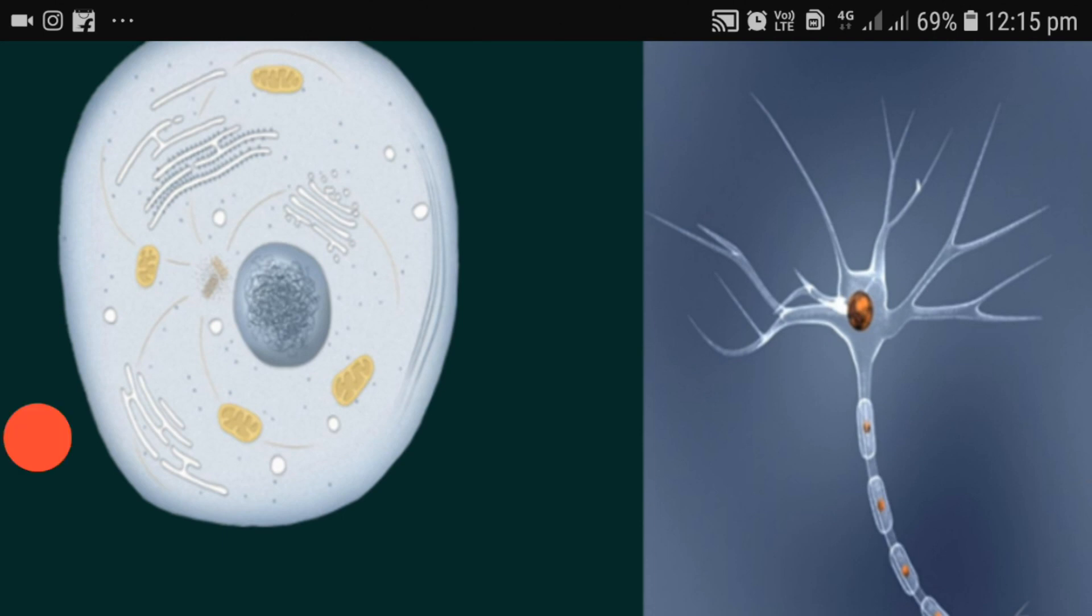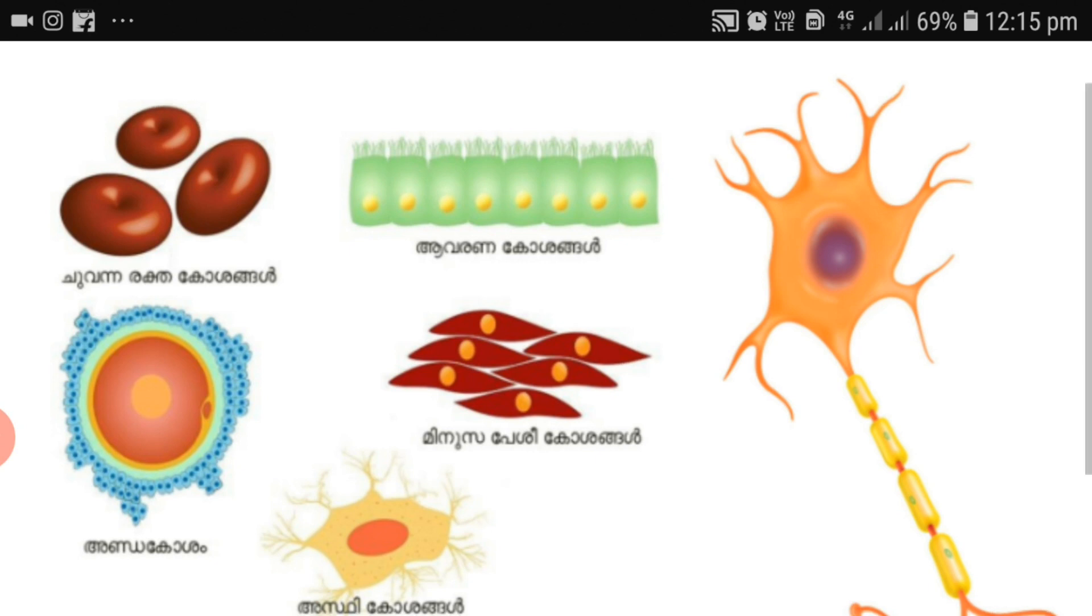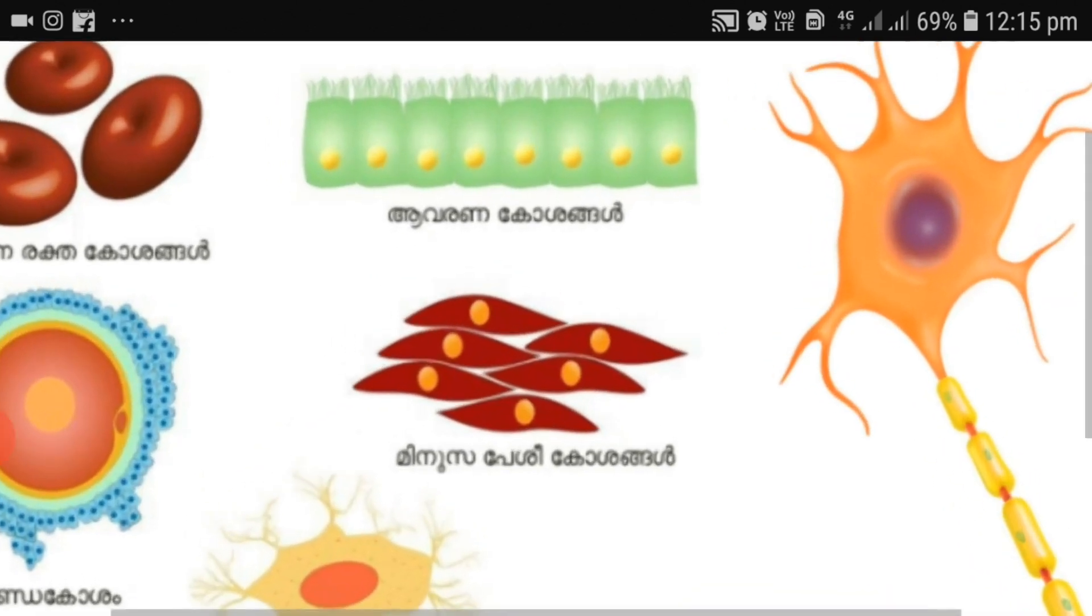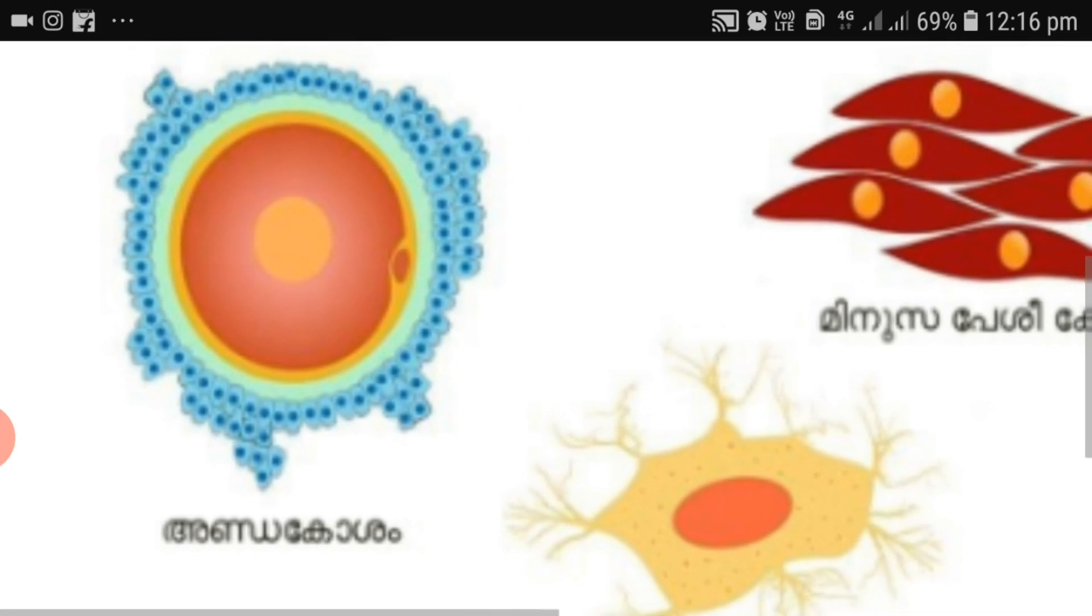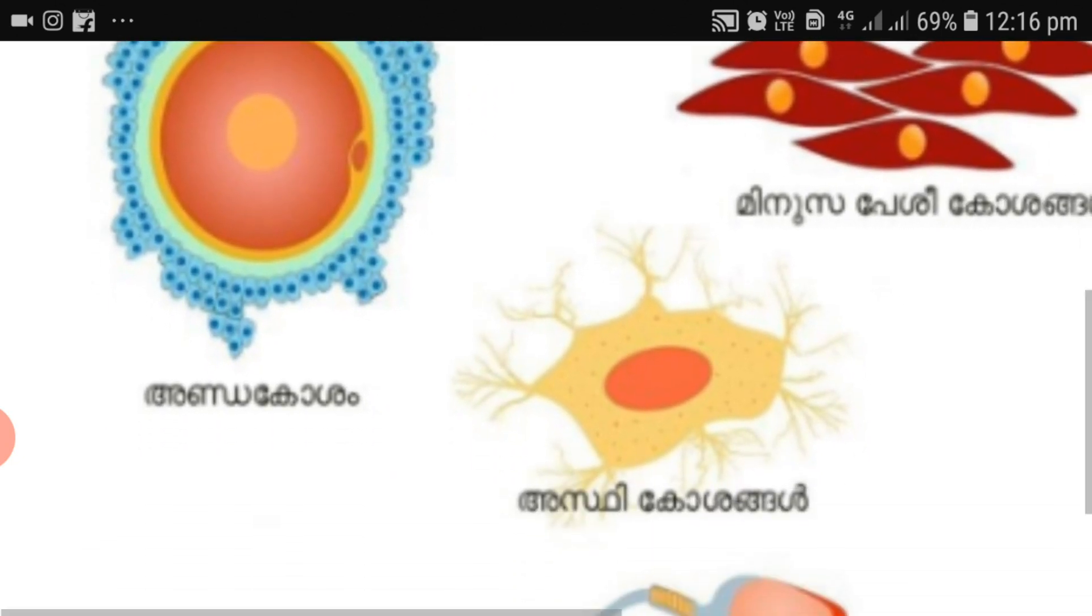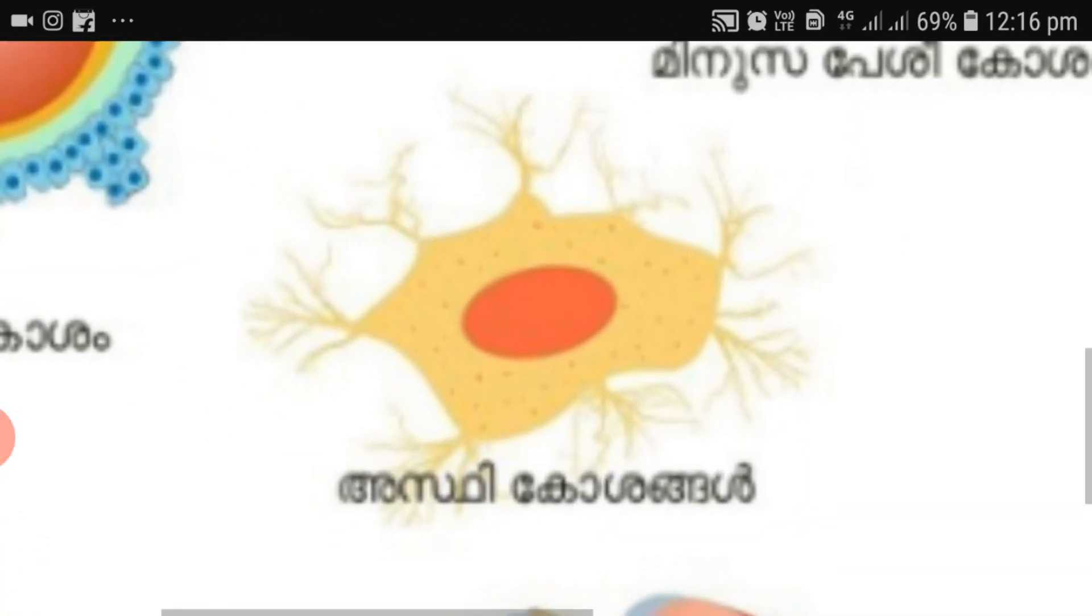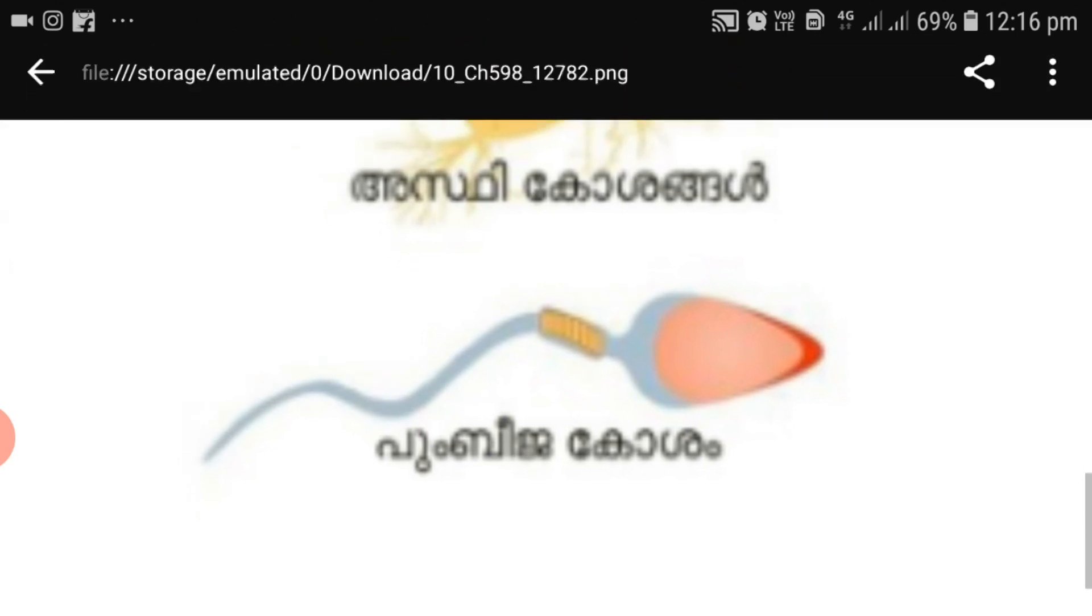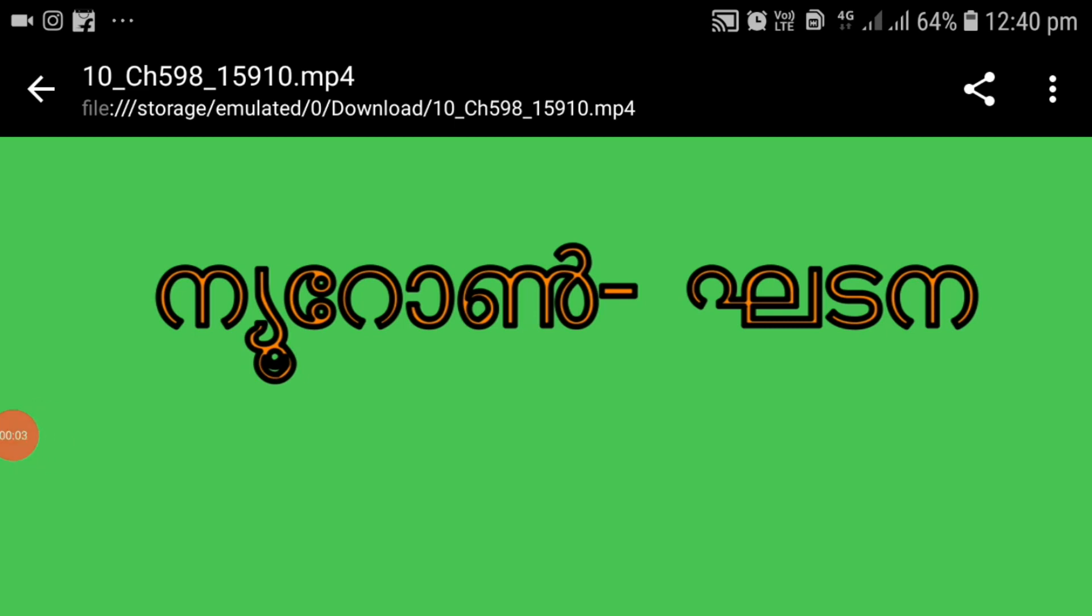Now observe these pictures and check whether their structure is similar. You can see different types of cells here: the neuron, epithelial cells, red blood cells, muscle cells, bone cell, sperm. All these types of cells you have learned in earlier classes. Now it's very clear that the structure of cells may differ according to their functions. We are going to study the structure of a nerve cell or neuron in detail.